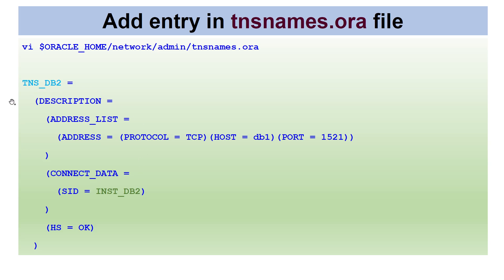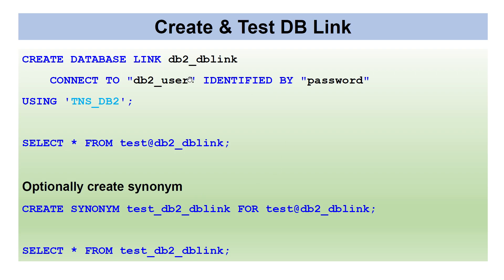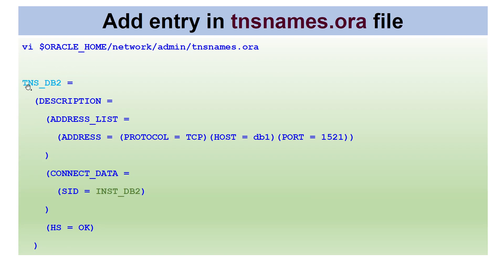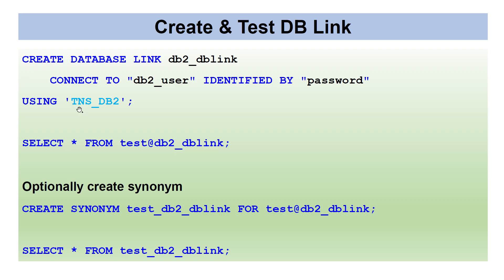Once all steps are done, log into the Oracle database and create the DB link. The syntax is: CREATE DATABASE LINK db2_dblink, specifying the DB2 user who has access to that database, the password, and the TNS entry name from tnsnames.ora.